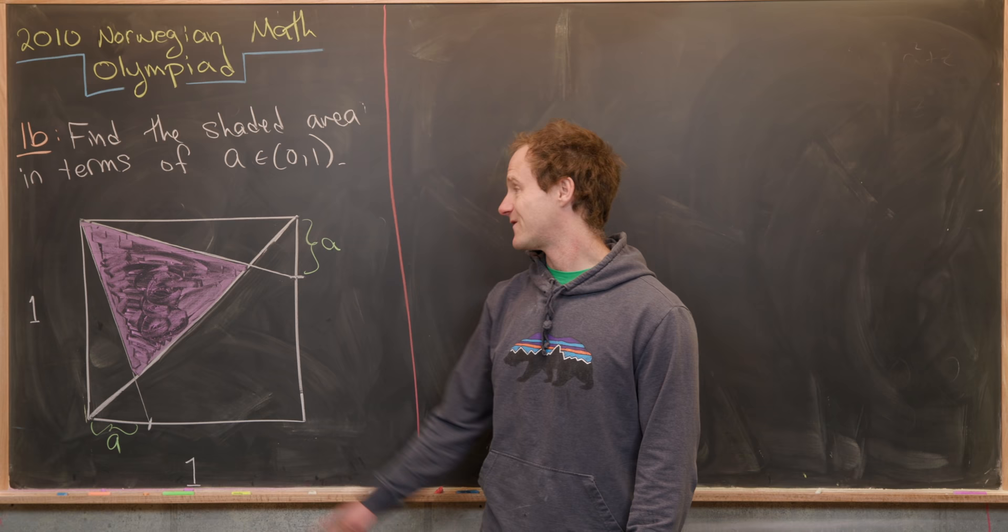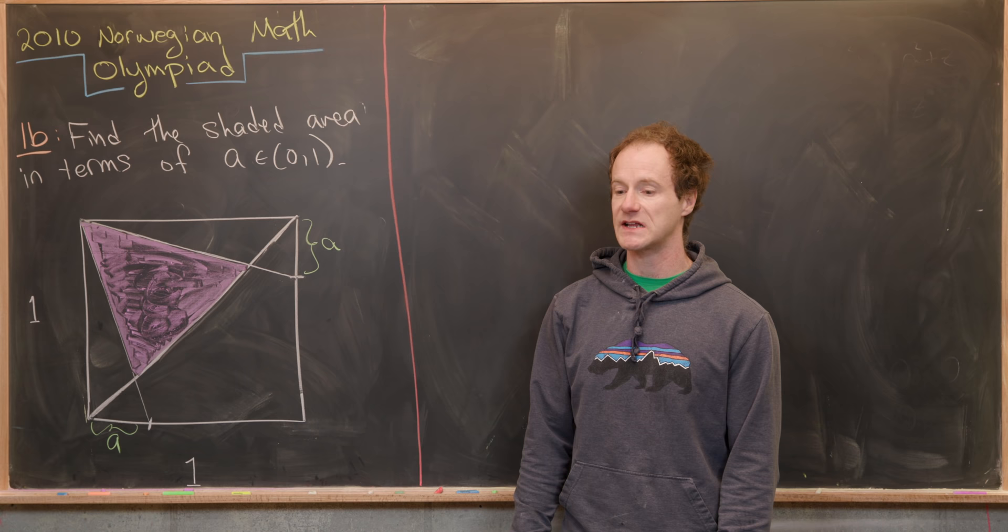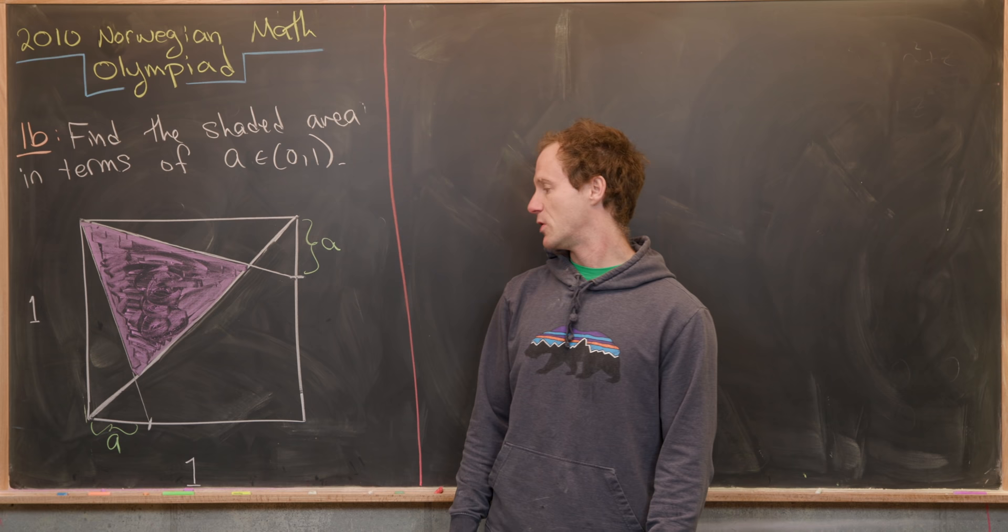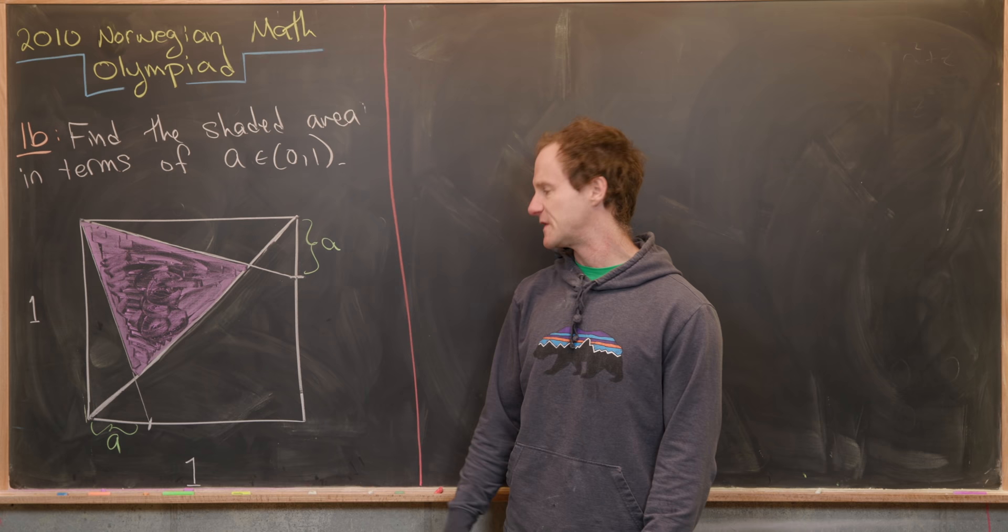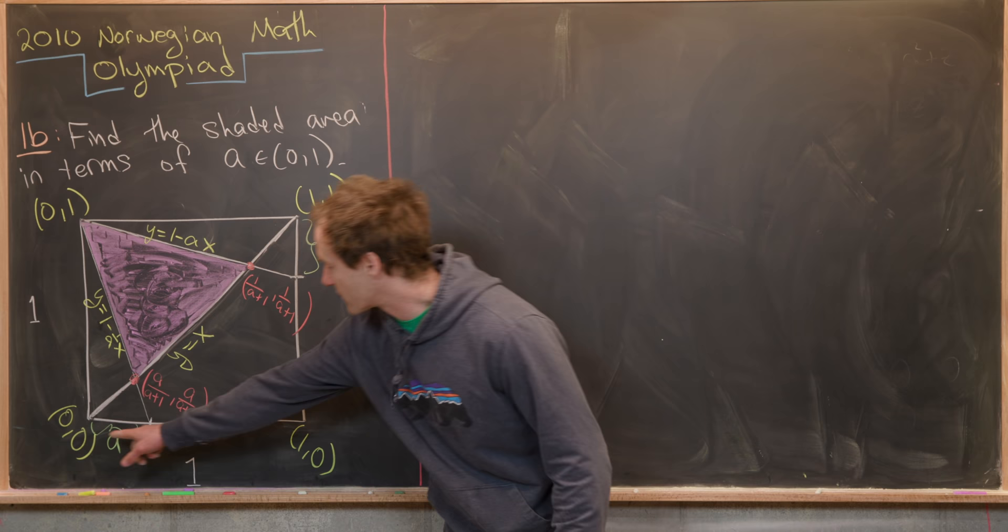And our goal is to find the area of this shaded region. And I'm going to do this maybe in a not super elegant way, but it's maybe the first way that I saw to do it. And that is to put it all into the coordinate plane and then use calculus. So let's put this in the coordinate plane. So there, I put it in the coordinate plane. And I saved you guys a bunch of the calculational details. They're not too bad. So here, I've got a point 0, 0 here, 1, 0 here, 1, 1 here, and 0, 1 here.